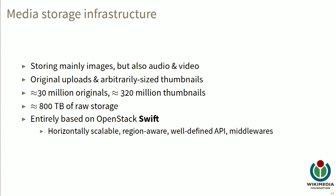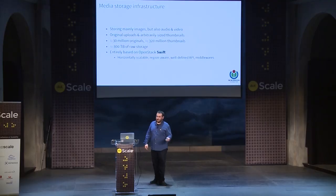Another big part of our traffic is our media storage architecture. We have mainly images, but also some audio and video in Wikimedia Commons and across all projects. The total raw storage is about 800 terabytes — the usable amount is far less due to the replication factor. The scalability issue here is mostly the quantity of files: we have more than 300 million files because of thumbnails, which is very hard to store and scale. We use OpenStack Swift for this. Despite the scalability issues, we've been fairly happy with it — it's region-aware, has a well-defined RESTful API, and is extendable using middlewares, which we use to interface with our image scalers.